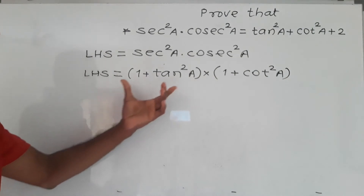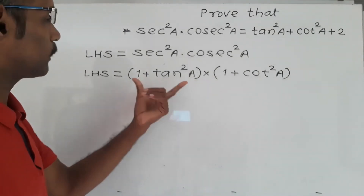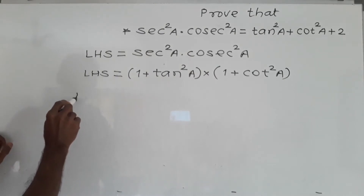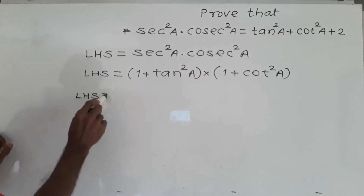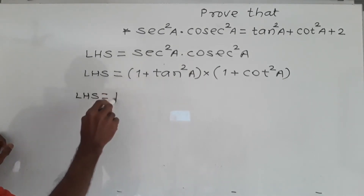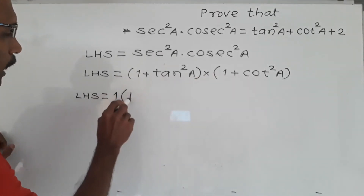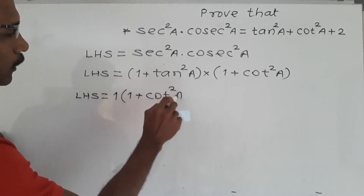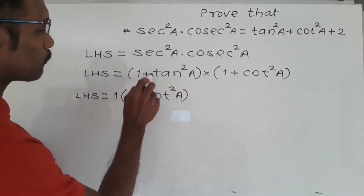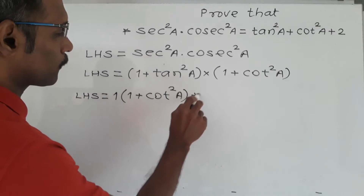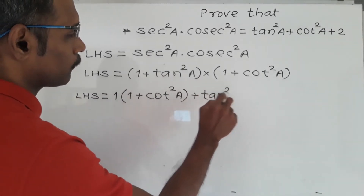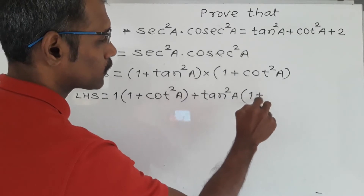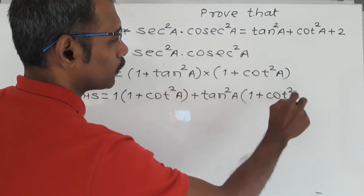Now here multiplication of these two brackets. For that purpose I will write LHS is equal to: I will take this 1 and multiply to the bracket 1 plus cot square A. Same way I will take this plus tan square A and multiply to the same bracket 1 plus cot square A.